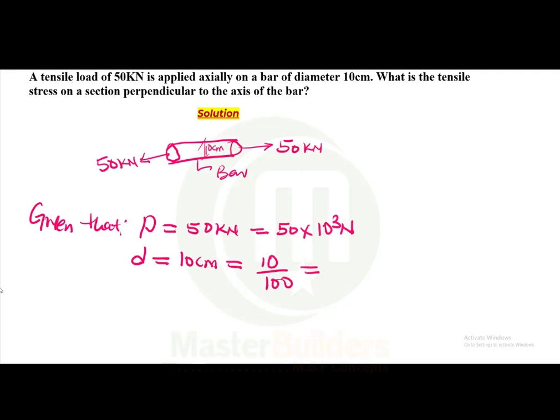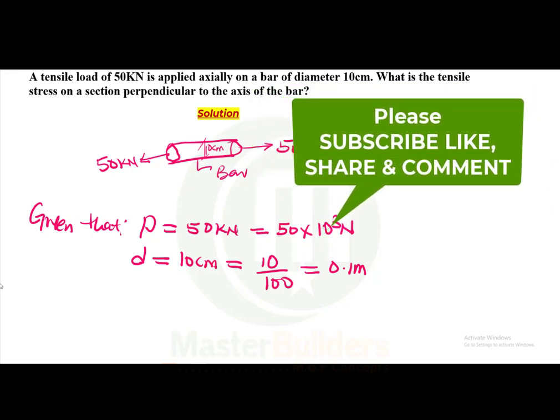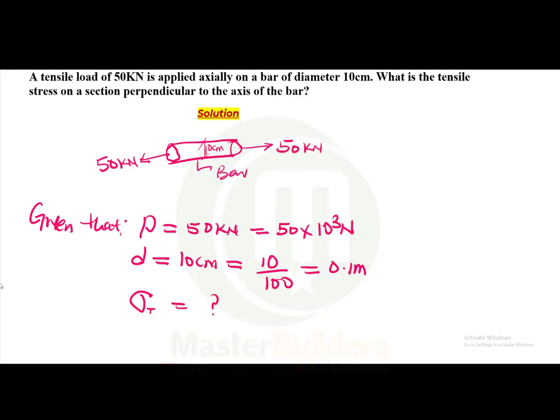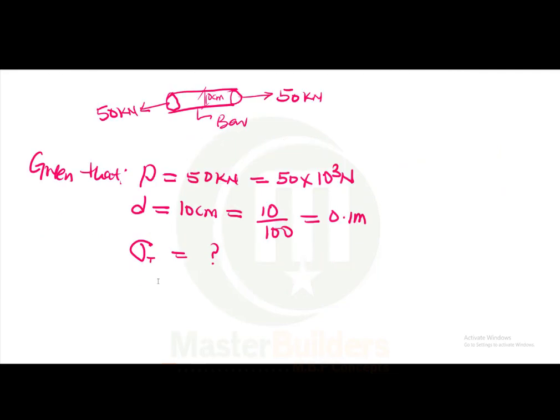So we have this divided by 100, and this would give us 0.1 meters. So we now have the diameter. Then what about the tensile stress? The tensile stress is given as this. This is the tensile stress, and this is unknown. So the next thing we are going to do now is to look for an equation that connects these three parameters.